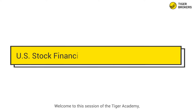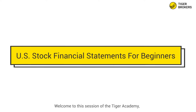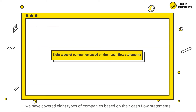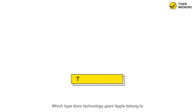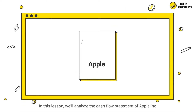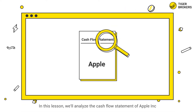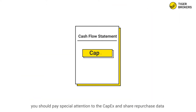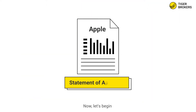Hi everyone, welcome to this session of the Tiger Academy: US stock financial statements for beginners. In the previous lesson, we covered eight types of companies based on their cash flow statement. Which type does technology giant Apple belong to? In this lesson, we'll analyze the cash flow statement of Apple Inc. In the cash flow statement, you should pay special attention to the CAPEX and share repurchase data. Now, let's begin.